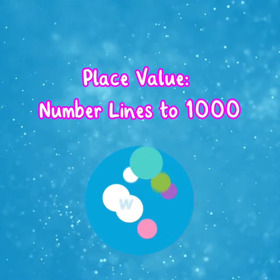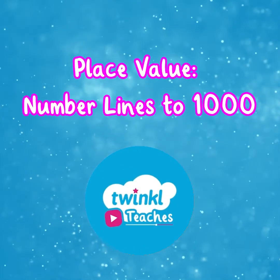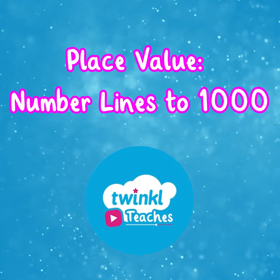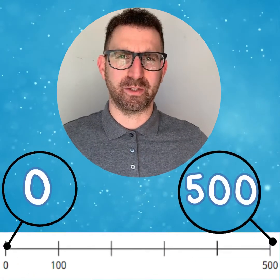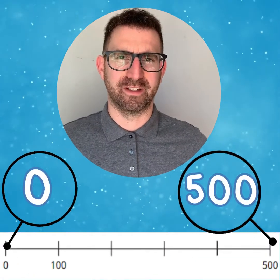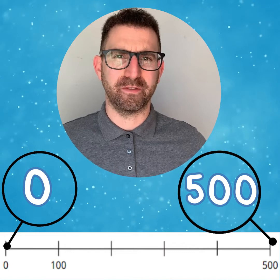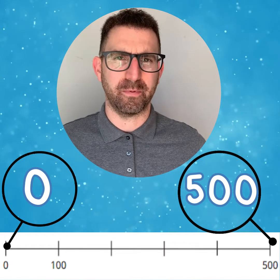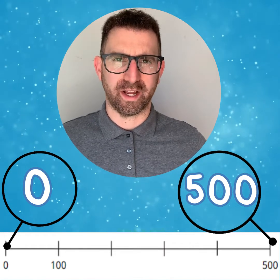Hello, this video is to help build on our understanding of number lines to 1000. Take a look at this number line. It begins at zero and ends with 500. These are important first clues to help us work out what each interval is worth.